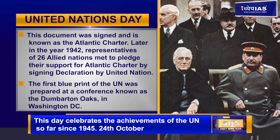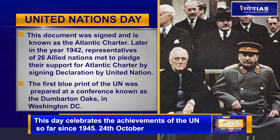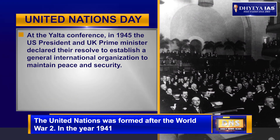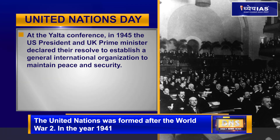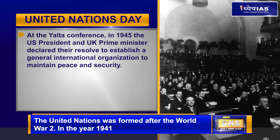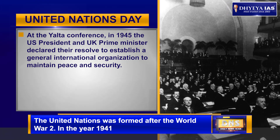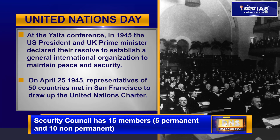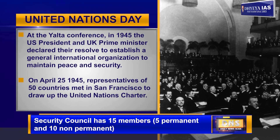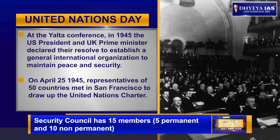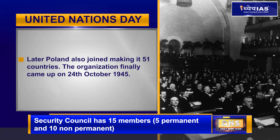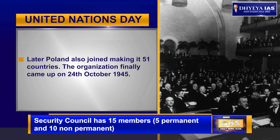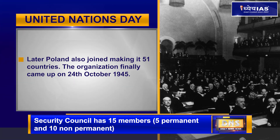The first blueprint of the UN was prepared at a conference known as the Dumbarton Oaks in Washington D.C. At the Yalta Conference in 1945, the US President and UK Prime Minister declared their resolve to establish a general international organization to maintain peace and security. On April 25, 1945, representatives of 50 countries met in San Francisco to draw up the United Nations Charter. Later, Poland also joined, making it 51 countries. The organization finally came into being on 24th October 1945.